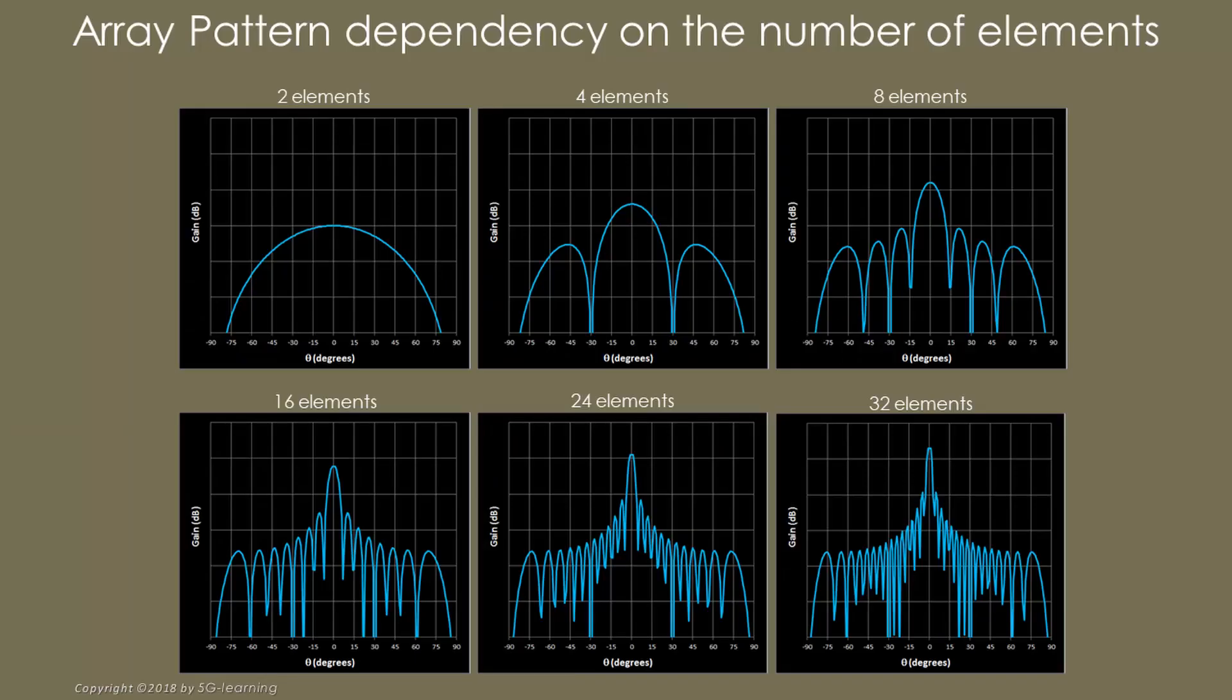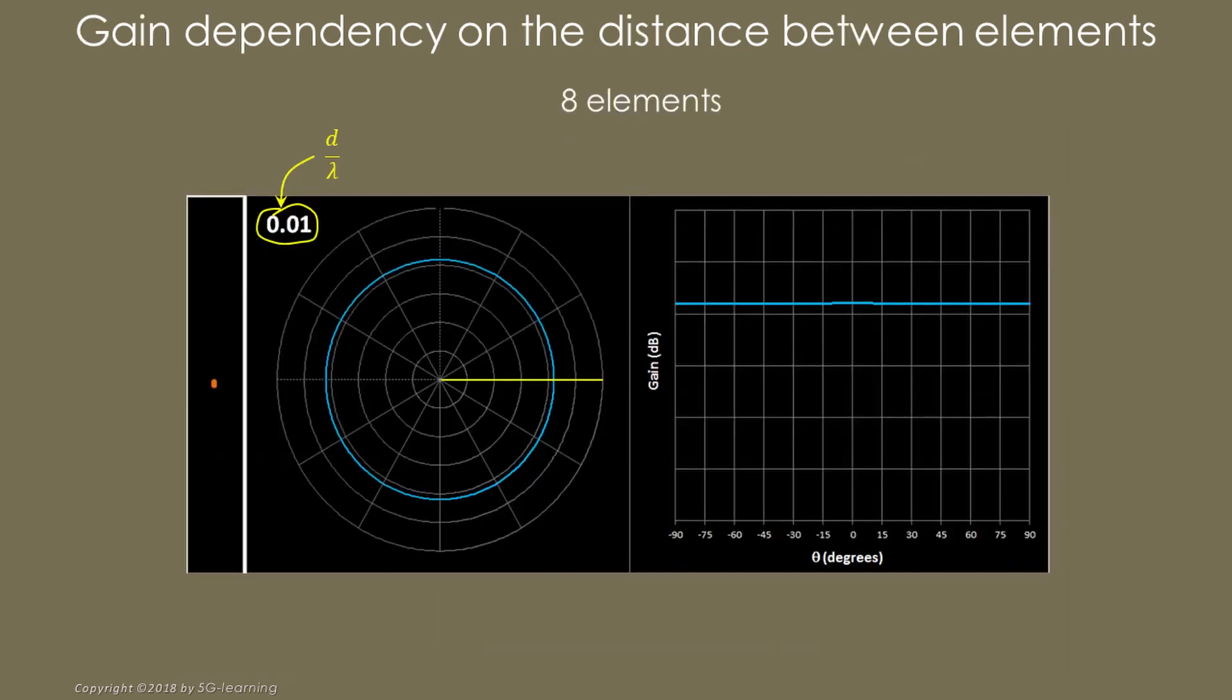This picture displays a subset of the configurations from the previous animation. Note that the maximum gain increases as additional elements are added to the array. Also note that main lobe widths decrease as well. The radiation pattern strongly depends on the distance between consecutive elements.